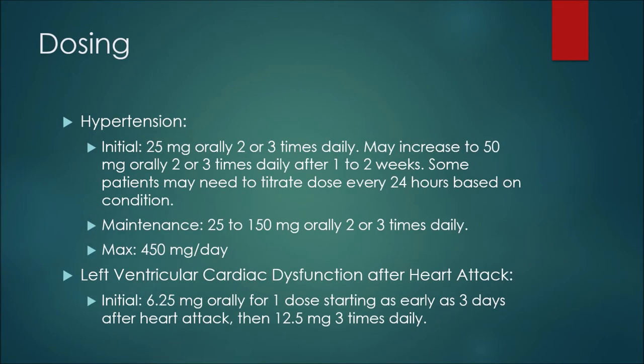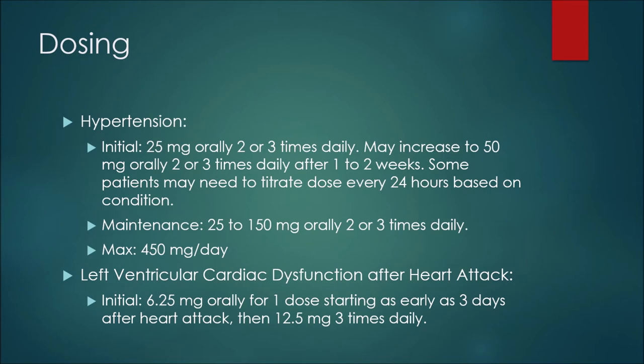For dosing in the treatment of hypertension, the initial dose would be 25 milligrams orally two or three times daily. The dose may be increased to 50 milligrams orally two or three times daily after one to two weeks; however, some patients may need to titrate their dose every 24 hours. The usual maintenance dose is 25 to 150 milligrams orally two or three times daily, and the usual maximum dose would be 450 milligrams per day.